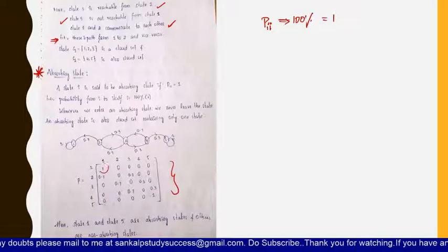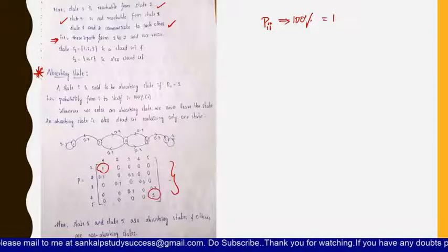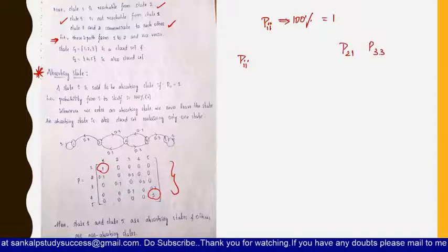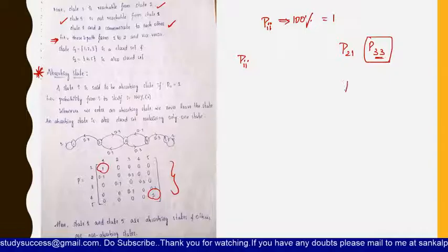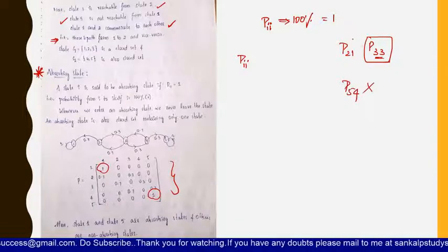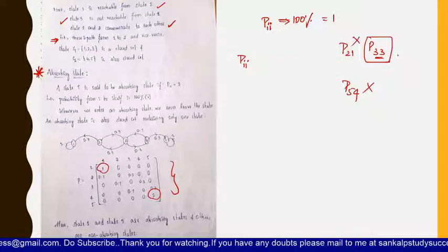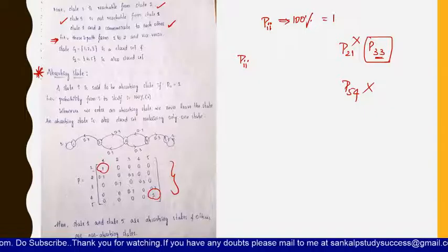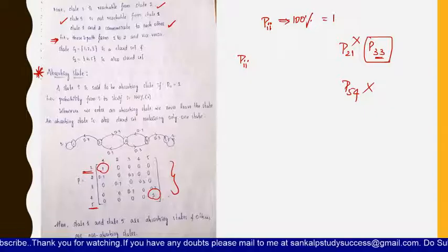If you see the transition probability matrix, for state one-one the value is one, and for state five-five the value is also one. You check only the principal diagonal values p(i, i); values like p(2,1) or off-diagonal entries are not considered. So state one and state five are the absorbing states and the other states are non-absorbing states.